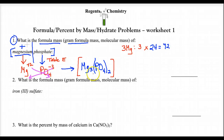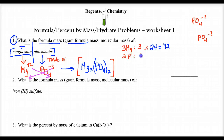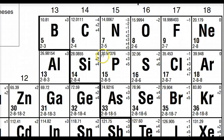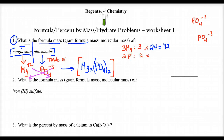Next, how many phosphorus atoms? There are two phosphate ions in the parentheses, so we have two P's. Two times each P. The atomic mass of phosphorus from the reference table is 30.9, which we round to 31. Two times 31 is 62.